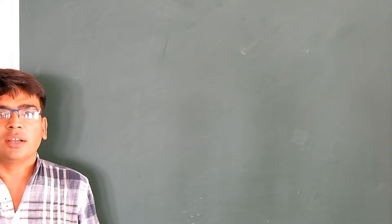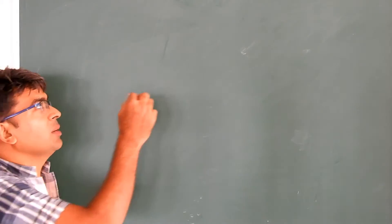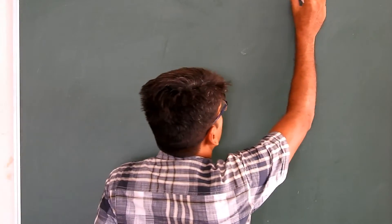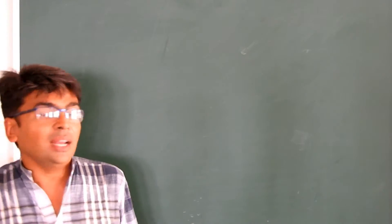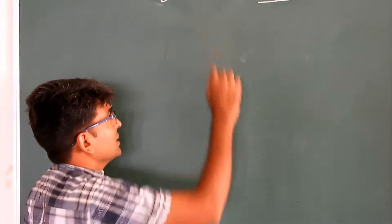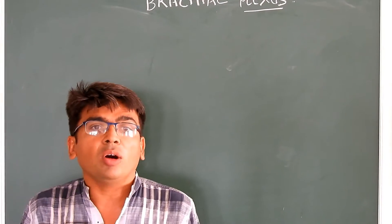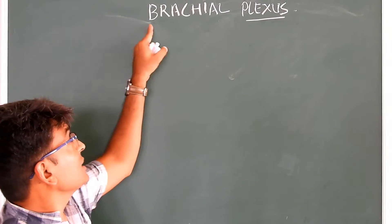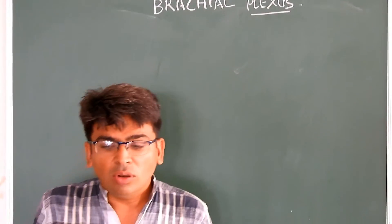Welcome to the Viola Voice of Anatomy. Today we are going to learn about the brachial plexus. Before the brachial plexus, we like to talk about the plexus — plexus meaning a network. The brachial plexus is a network of nerves supplying the upper limb.